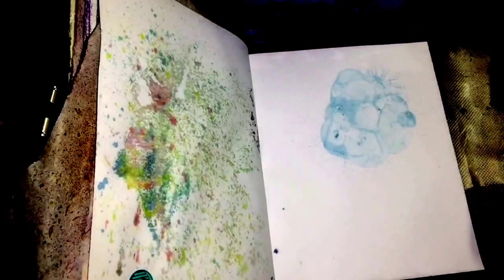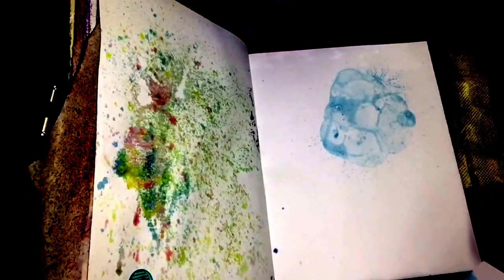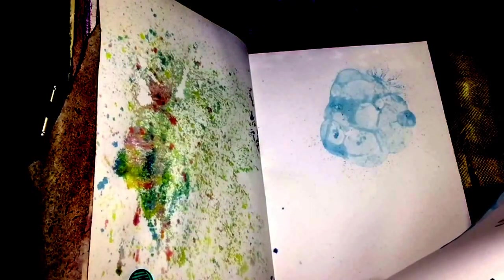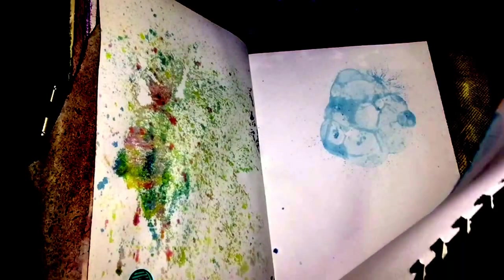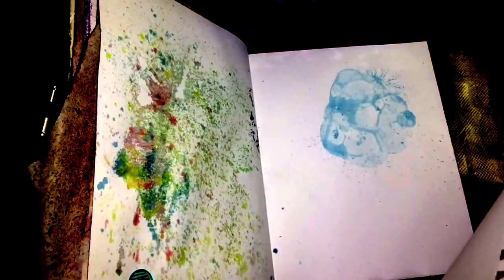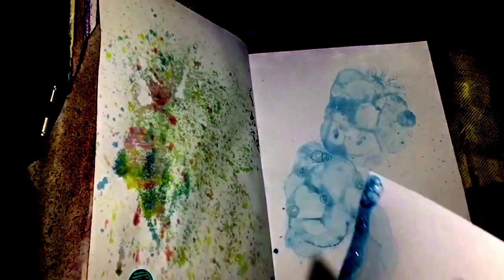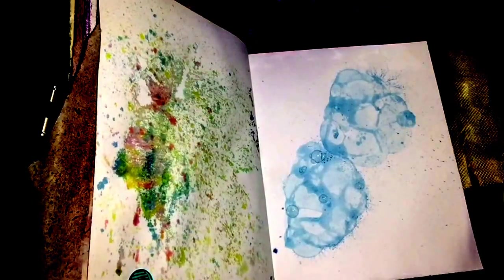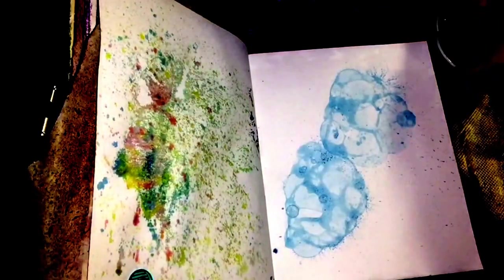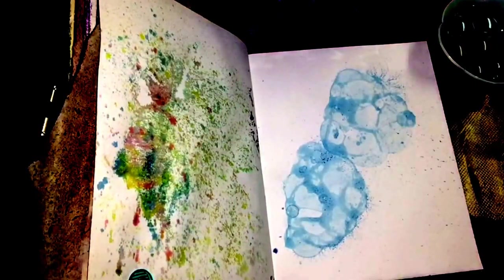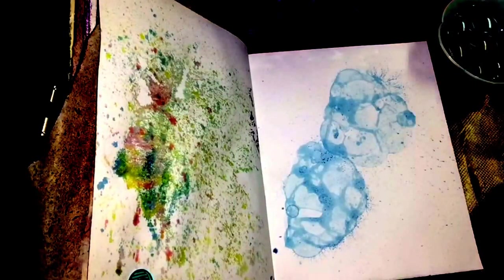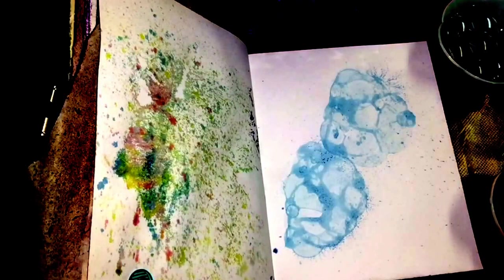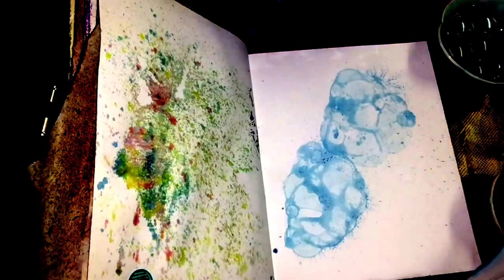Okay, all right, there we go. There's the first bubble print right there, and there's the second. I'm gonna do another color here. Now I have blue, red and yellow, which they're gonna be light because they're mixed in with water and it's really diluted. So we're gonna try this with another color.